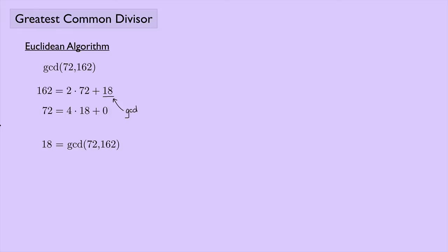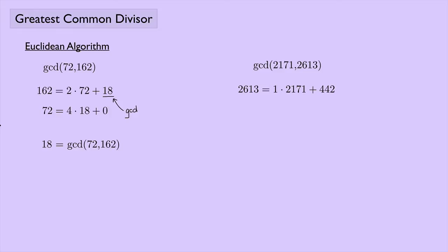When you use this procedure, you're always looking for the last non-zero remainder — that's going to be the greatest common divisor. Let's look at another example: the greatest common divisor of 2,171 and 2,613. We start out with the larger, 2,613, and that equals 1 times 2,171 — so that number goes in once with a remainder of 442.